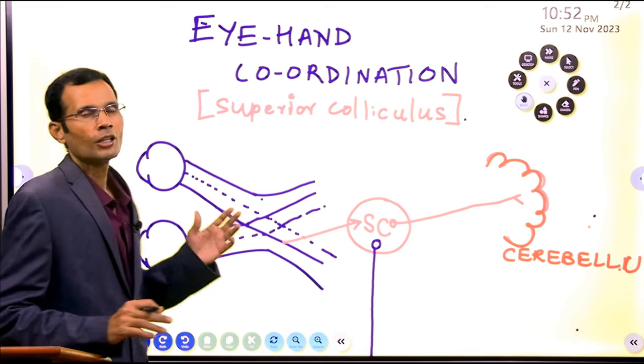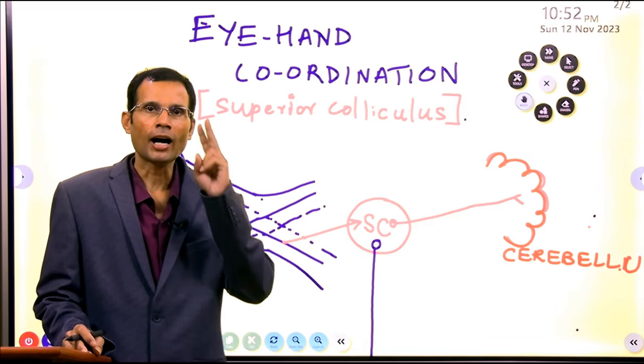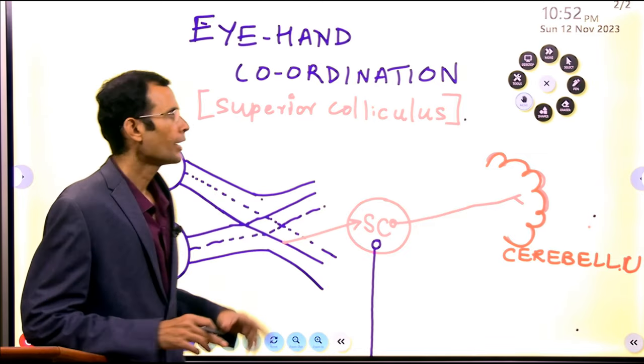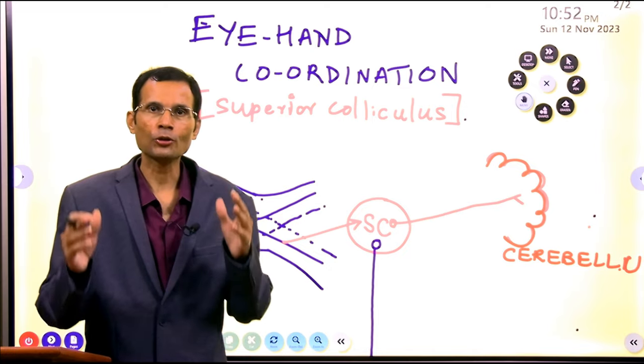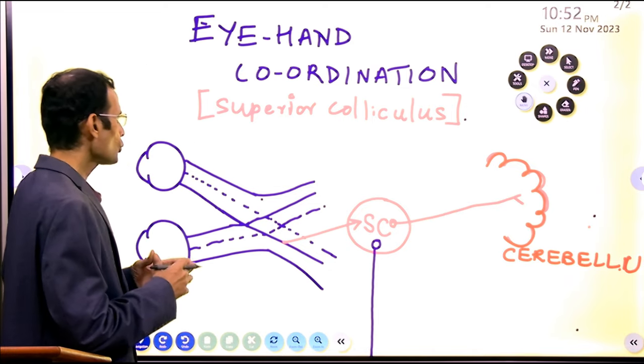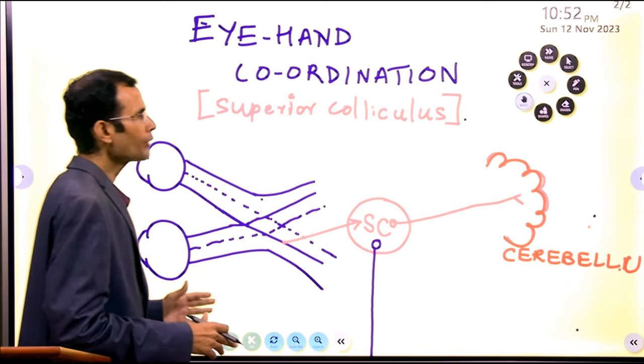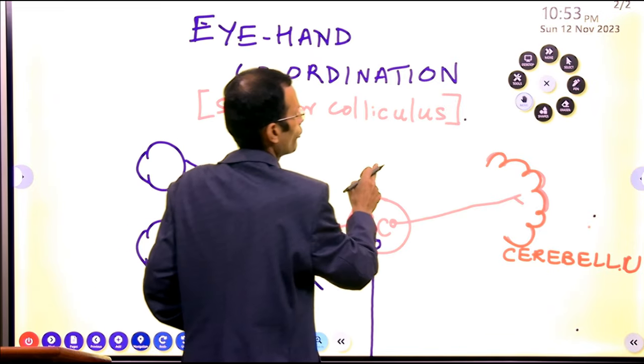Now, first of all, the two things which are required: eye, that is vision, and hand muscle contractions or coordination. So we need a visual pathway for this, for the visual inputs.